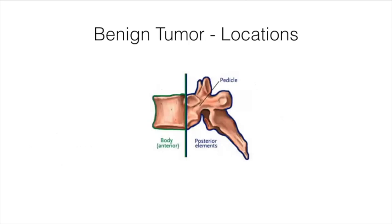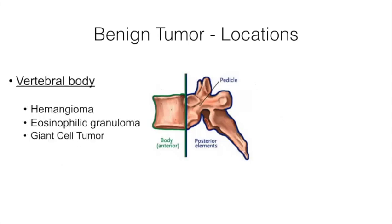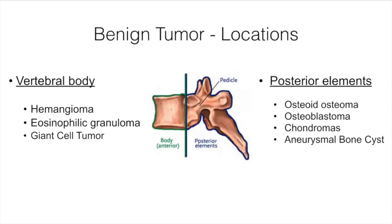Going through benign tumors in more detail: one way to think about the type of tumor in a simplified form is whether it involves the anterior column or the posterior elements. Tumors of the vertebral body or anterior column most commonly include hemangiomas, eosinophilic granulomas, and giant cell tumors. Those isolated to the posterior elements are osteoid osteomas, chondroblastomas, chondrosarcoma, and ABCs — though there is definitely overlap.